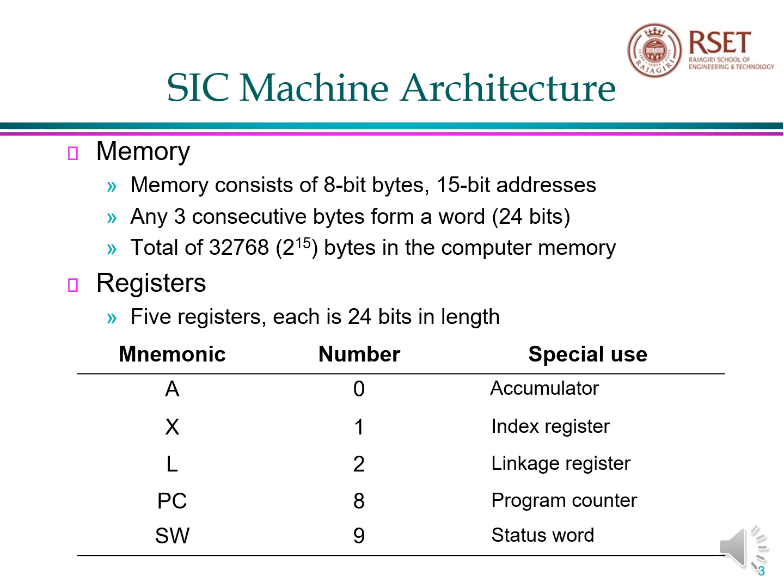Now let us see the registers used. There are mainly 5 registers, and the registers will be of size 24 bits. The registers are register A, register X, register L, program counter, and status word, having the numbers 0, 1, 2, 8, and 9 respectively. They are designed for special use. Register A, which is also called as accumulator, is used in the case of arithmetic operations. Register X, also known as index register, is used in addressing. Register L, which is also known as linkage register, is used to store the return address in a jump to subroutine. PC, the program counter, will always be storing the address of the next instruction to be executed. SW, that is the status word, will be storing the status of certain operations.